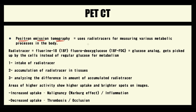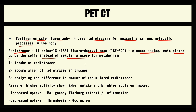Positron emission tomography is a diagnostic method where we use radiotracer for measuring various metabolic processes in the body. The most common radiotracer is fluorine-18-fluorodeoxyglucose, which is a glucose analog that gets picked up by cells instead of regular glucose. After the intake of radiotracer, cells begin to consume it, and it begins to accumulate in the tissues. By PET-CT we can determine the difference in the amount of radiotracer between various tissues, allowing us to see which tissue consumes more glucose and which consumes less.